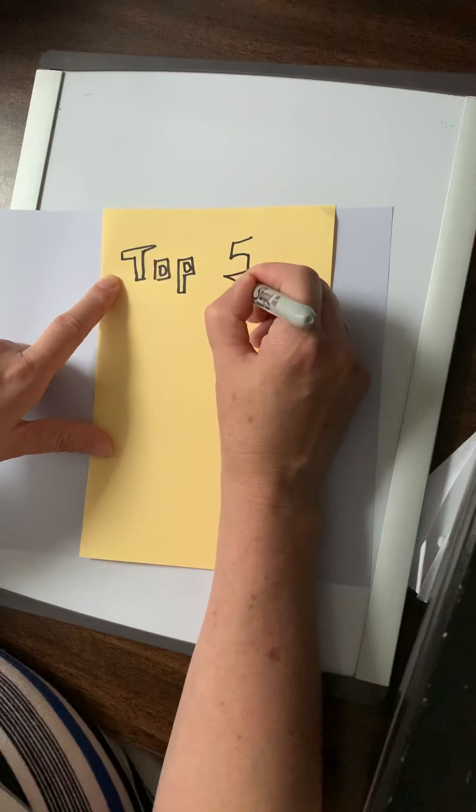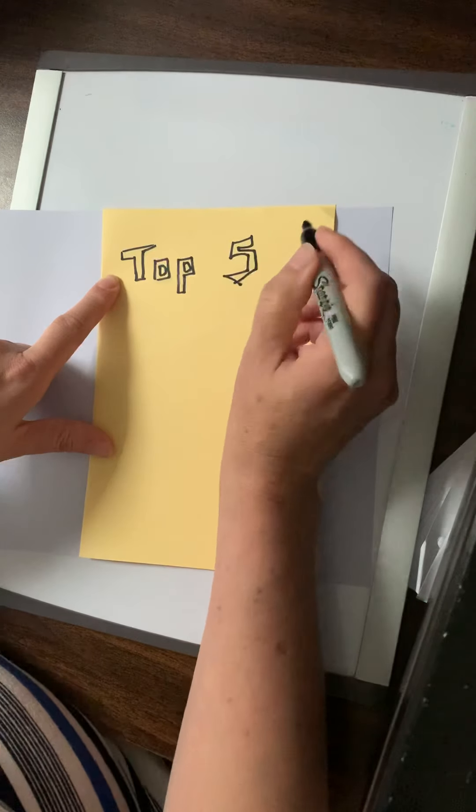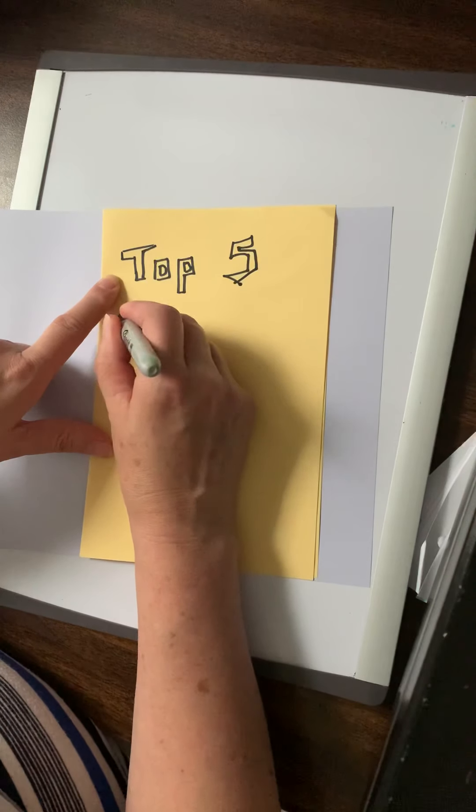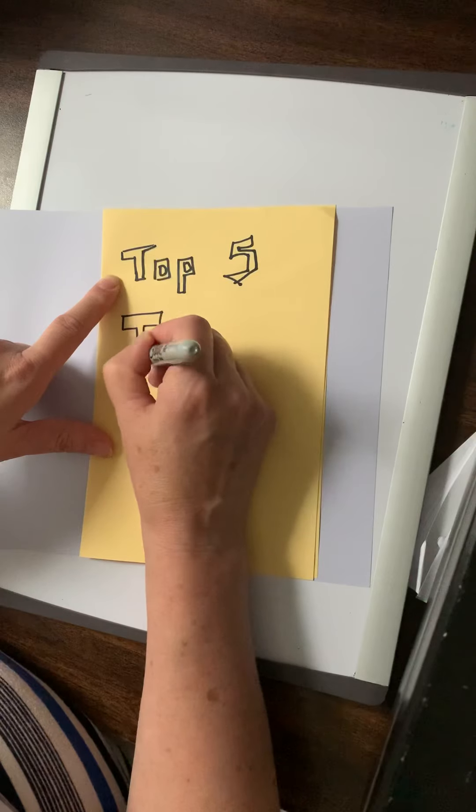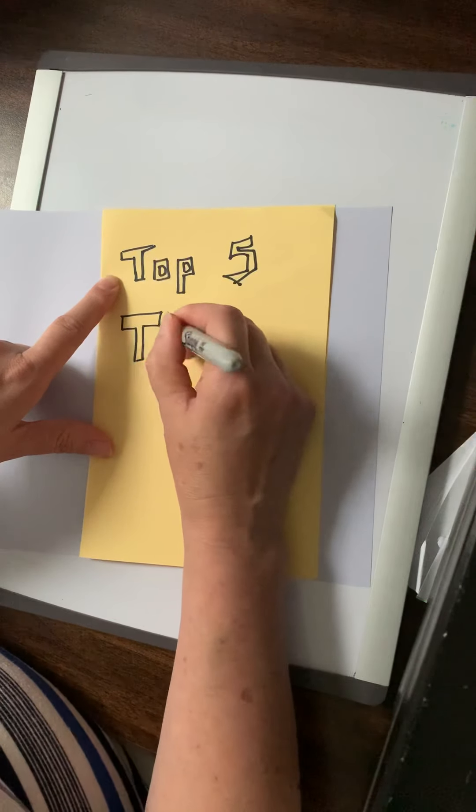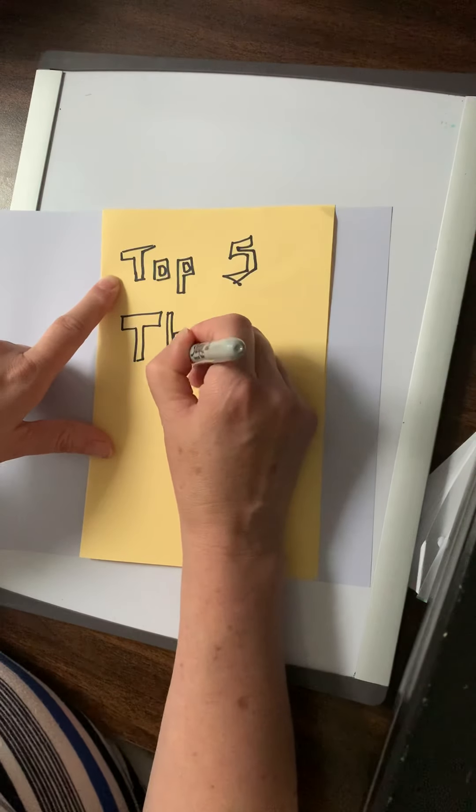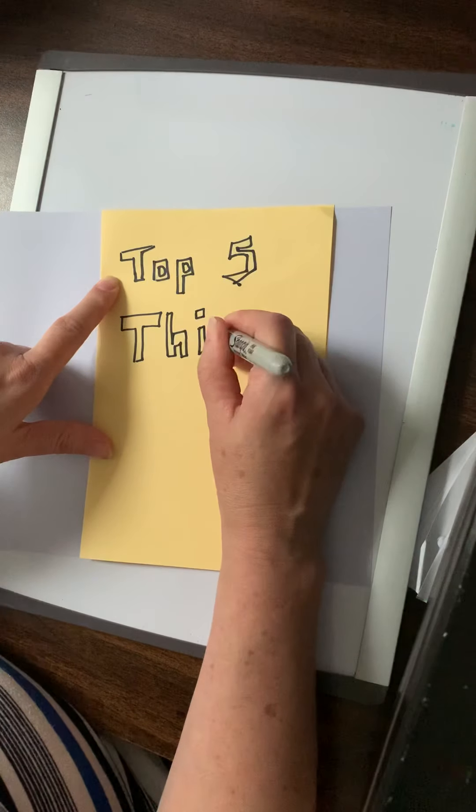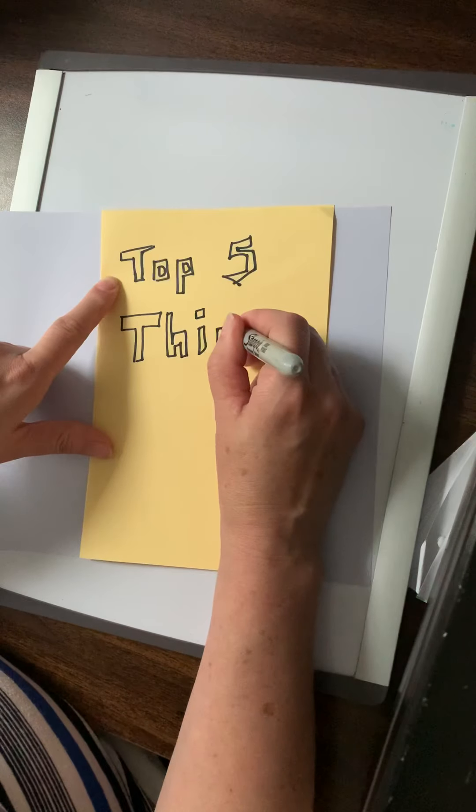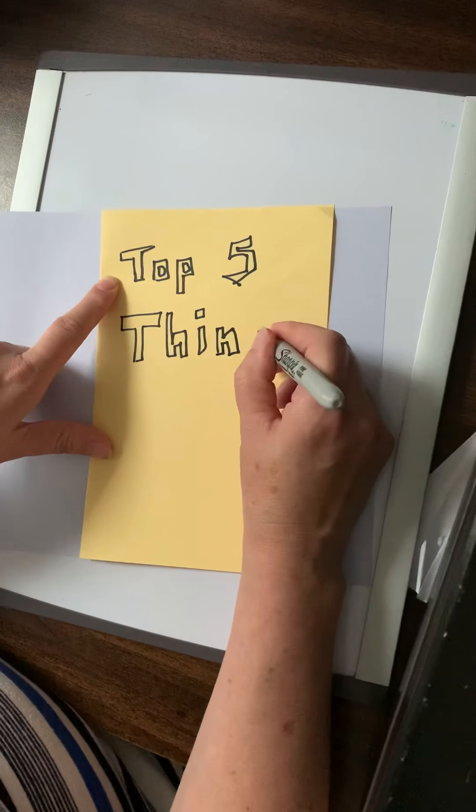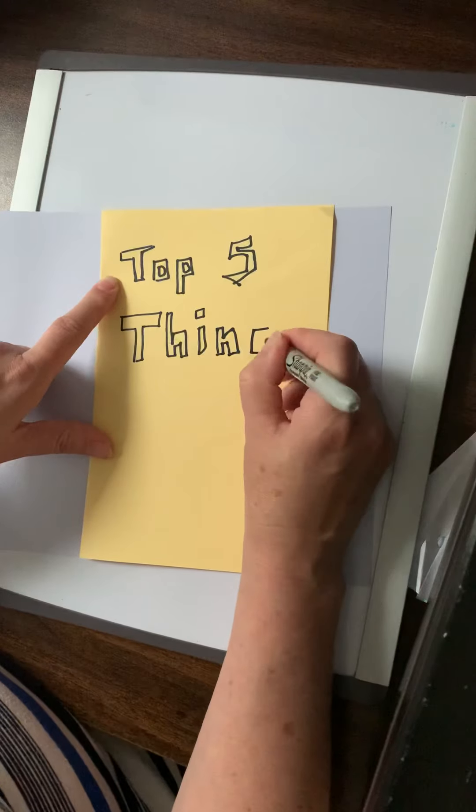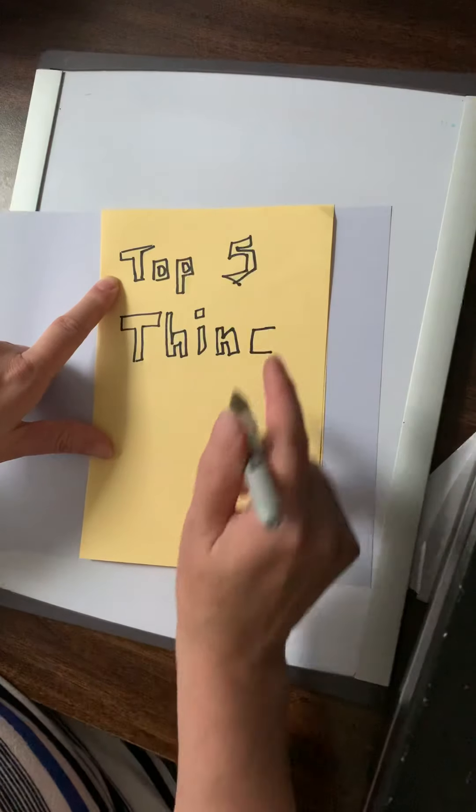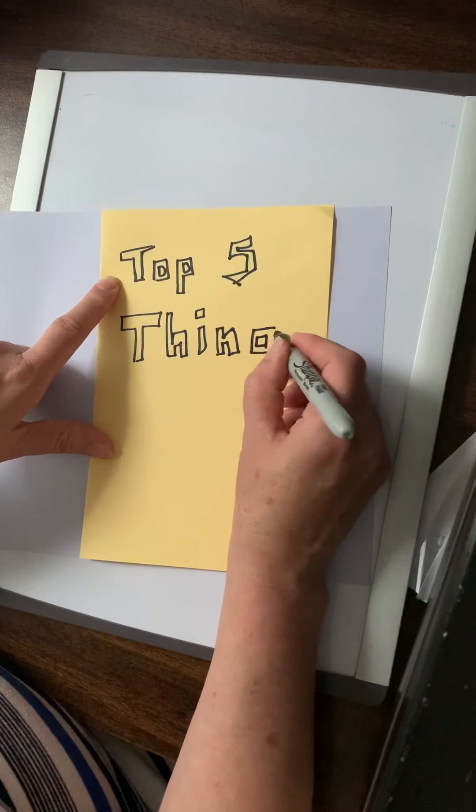Top five things. Any kind of letters that you are comfortable making that look a little bit interesting and don't make them all tiny up at the top. You want to kind of spread them out over your card cover. Top five things.